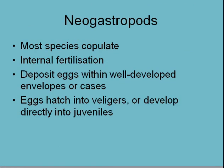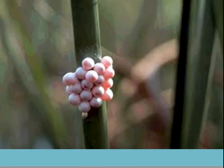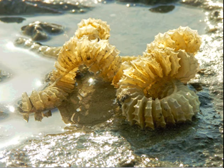Neogastropods — most species will copulate rather than broadcast spawn. They have internal fertilization, which is something we haven't seen in many of the other phyla we've looked at. They deposit eggs within well-developed envelopes or cases, and these hatch into veligers for larval distribution in the water column, or they develop directly into juveniles. In the marine ecosystem, when you see a whelk or a neogastropod egg case, it'll look something like this.